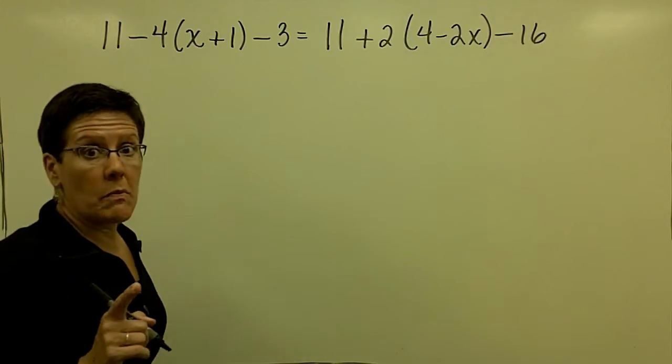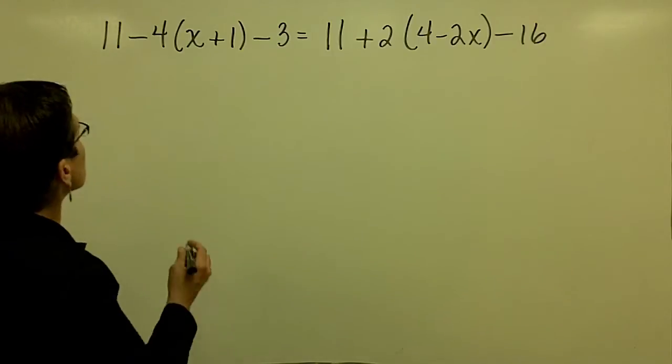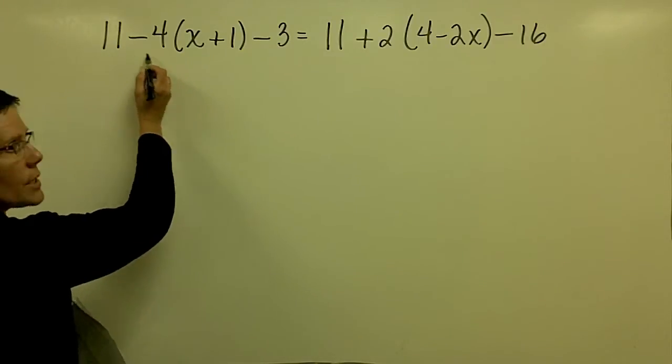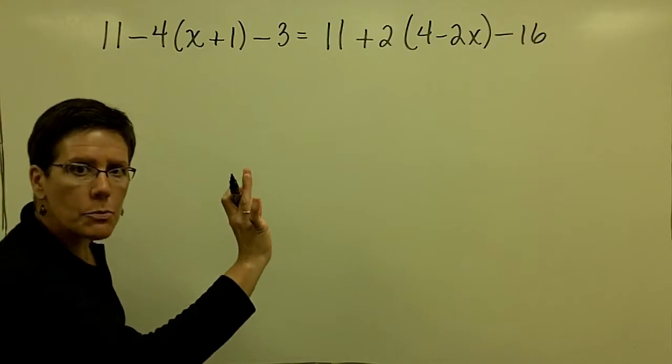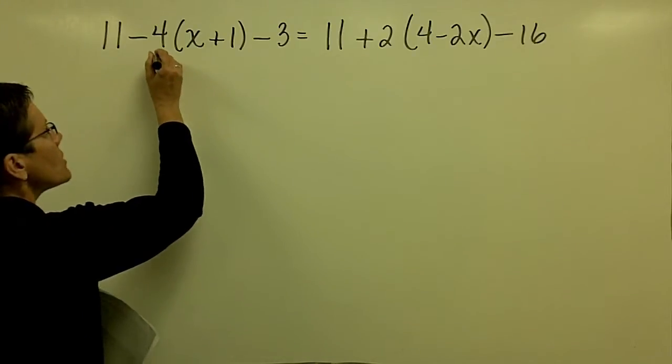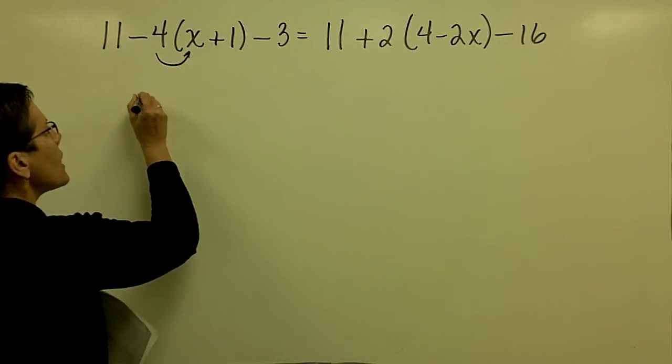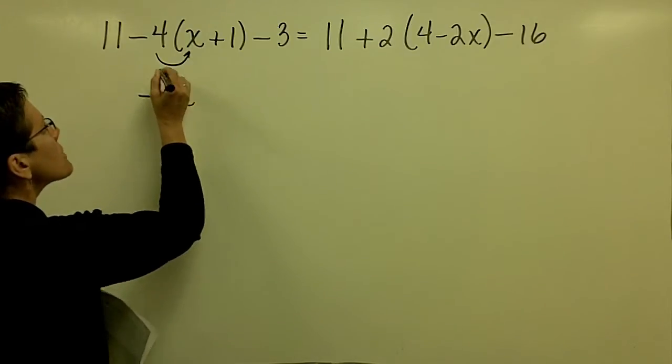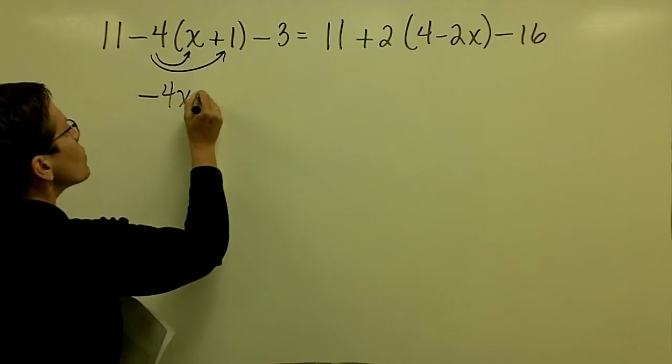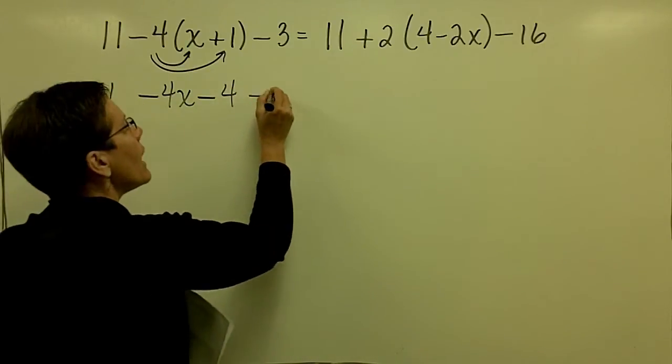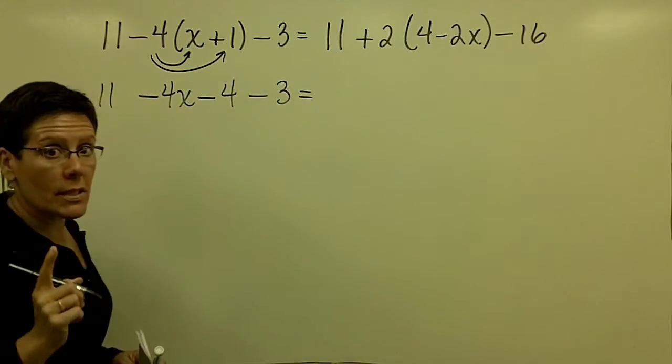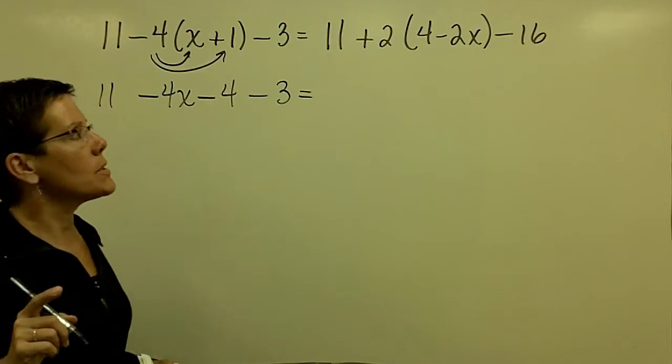We still follow the same principles that we've been using, so let's clear the parentheses. Please don't take 11 minus 4 and get 7. That's not what you're supposed to do. You never subtract first. Order of operations says to multiply the negative 4 times x and get a negative 4x, and a negative 4 times 1 is a negative 4. Just be careful with your multiplication in your head.